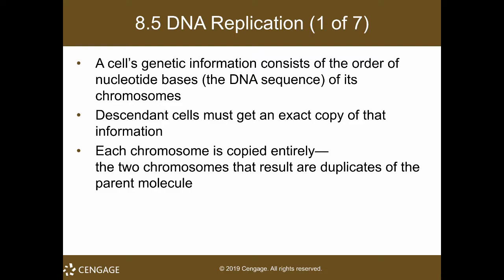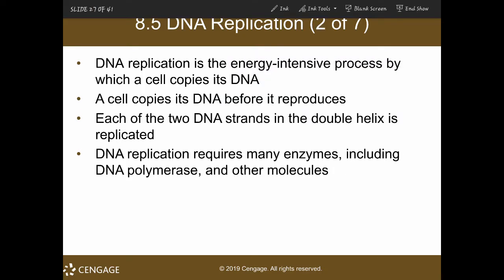The cell's genetic information consists of the order of the nucleotide bases, which is your DNA sequence — the nucleotide bases of the chromosomes. Descendant cells must get an exact copy of that information. Each chromosome is copied entirely, and the two chromosomes that result are duplicates of your parent molecule.